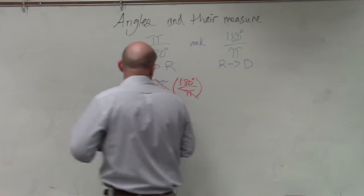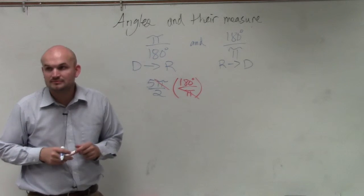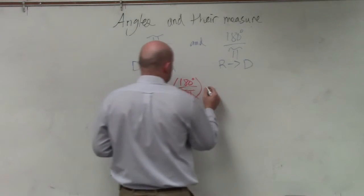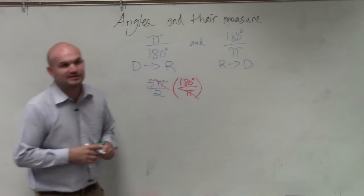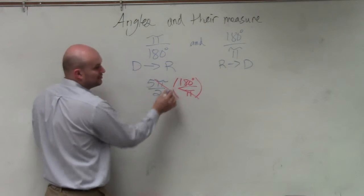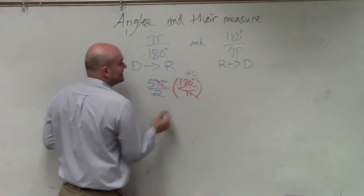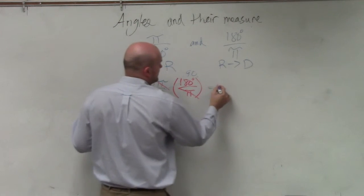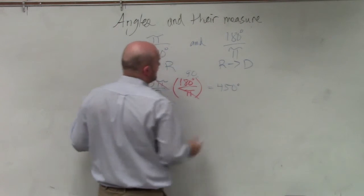180 times pi? Yep, and then divide it by 2. 450. The other way to do this is you could always divide the 2 into the 180, which would give you 90. 5 times 90, 450 degrees.